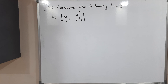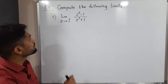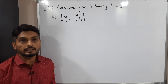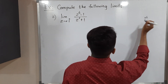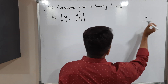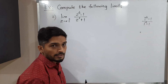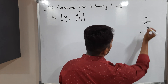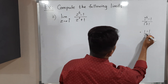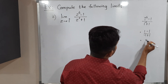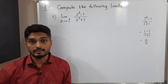Now let us discuss the second example: find the value of the limit as z tends to i of (z⁴ - 1)/(z² - 1). We first try direct substitution with z = i. Putting z = i: the numerator gives i⁴ - 1 = 1 - 1 = 0, and the denominator gives i² - 1 = -1 + 1 = 0. So we get a 0/0 form, meaning direct substitution does not work and we need to simplify further.